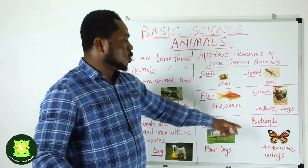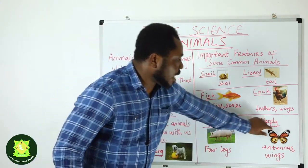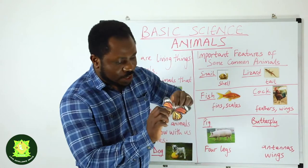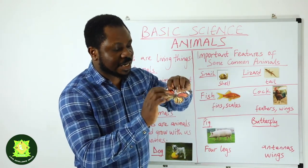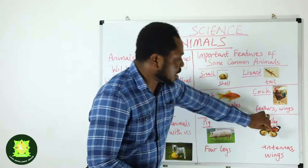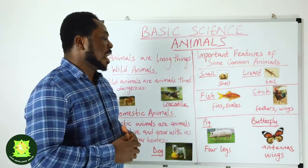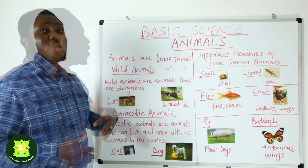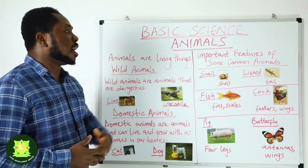You can also see the picture of the butterfly. A butterfly has antennas — you can see the antennas here — and they also have wings. The antennas help them to sense things, and the wings help them to fly. So these are important features of some common animals.